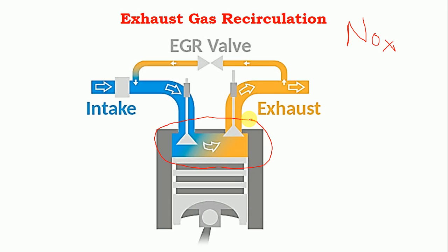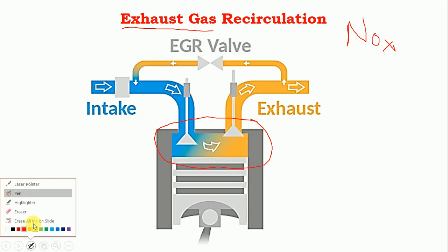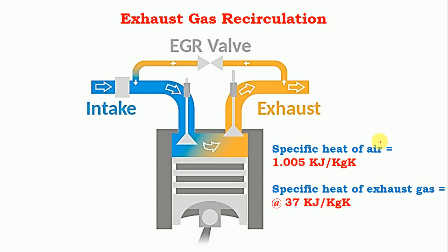The best way of reducing NOx is to keep the temperature within limits. If the temperature goes beyond the limit, NOx will be generated. Now the next question is: how does exhaust gas recirculation maintain the temperature of this system so that NOx will not be produced? For understanding this, consider the specific heat values: the specific heat of air is about 1 kilojoule per kg·Kelvin, whereas the specific heat of exhaust gas is about 37 times that value.